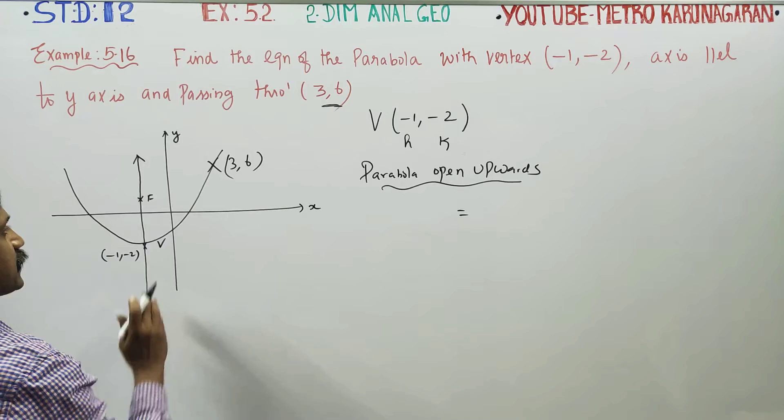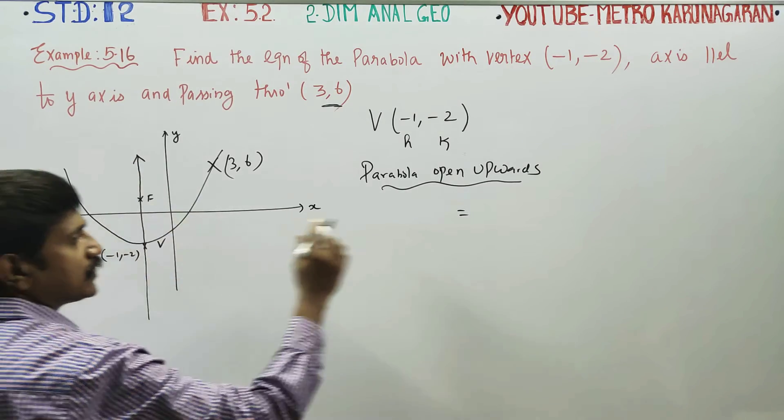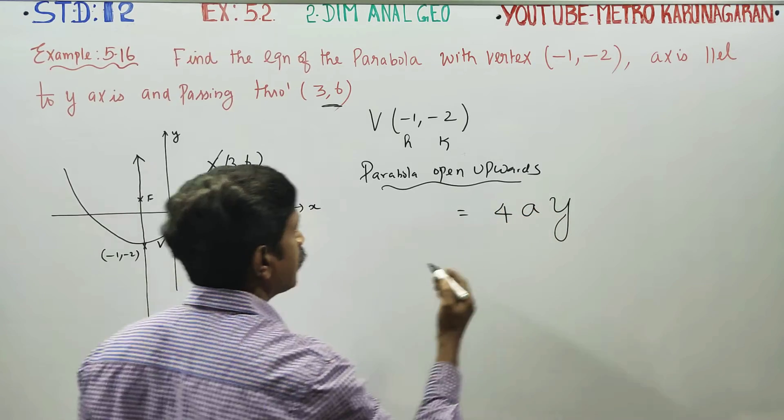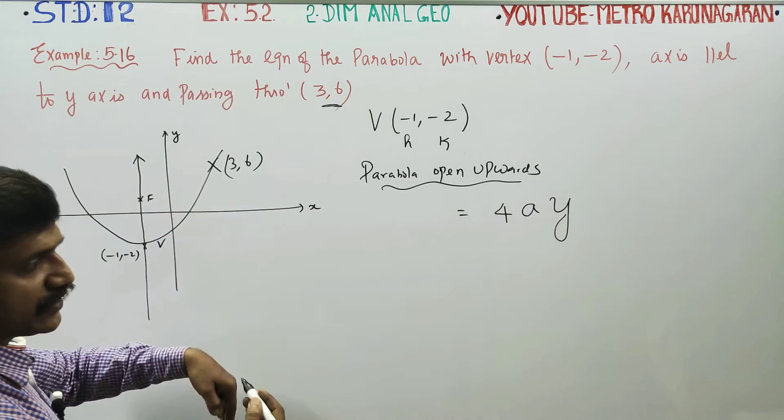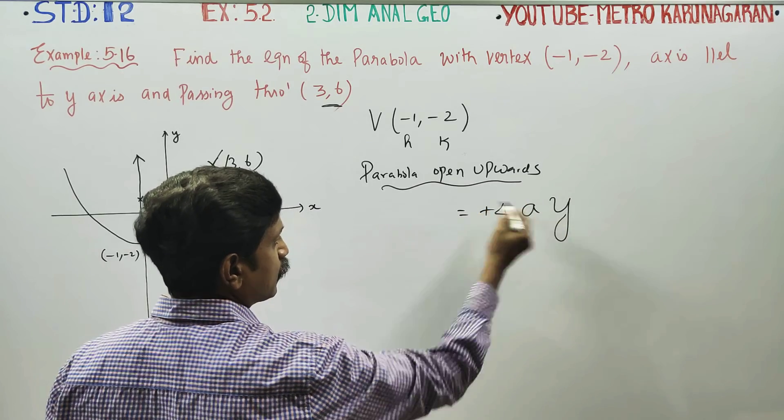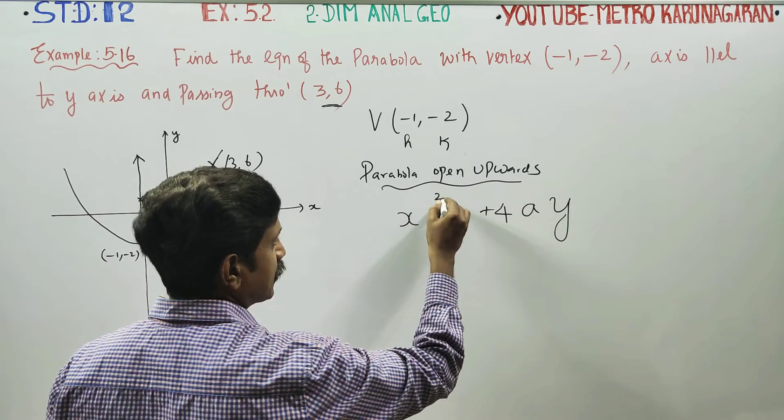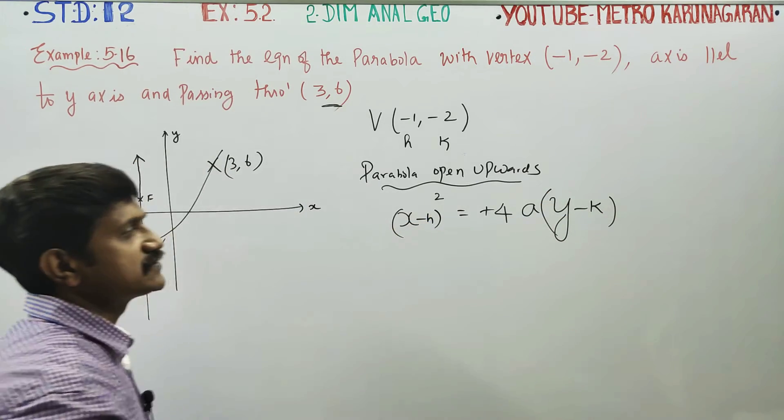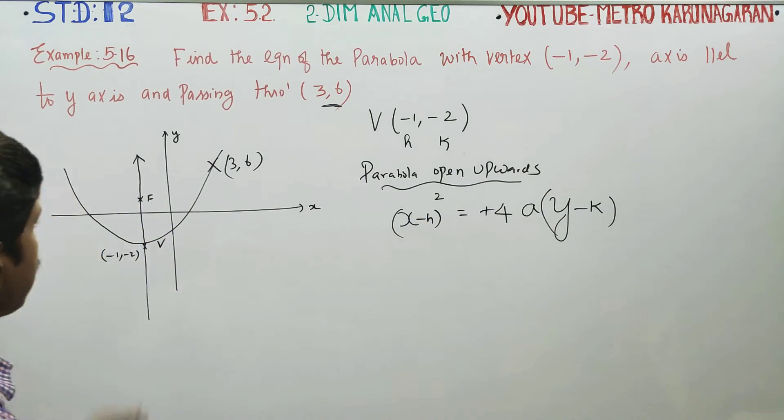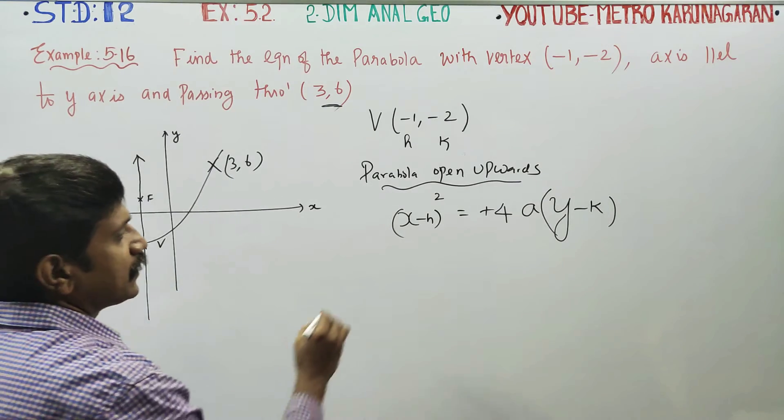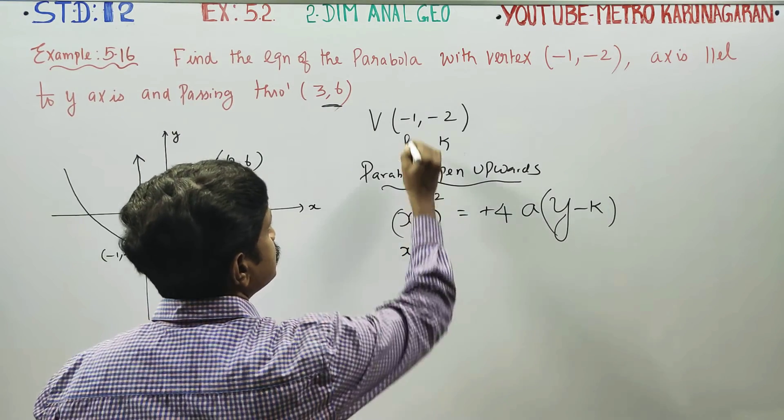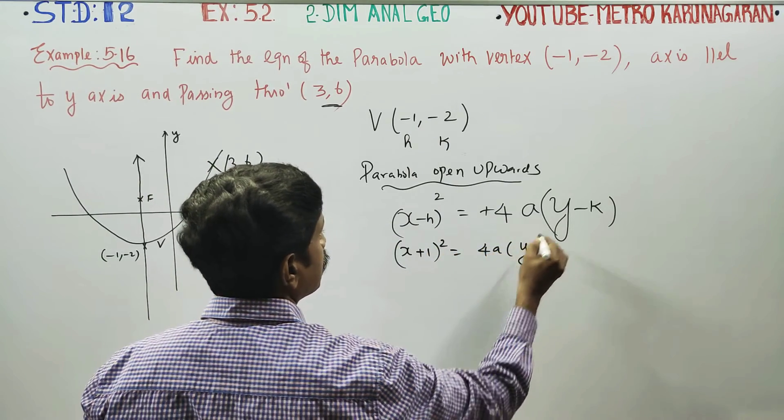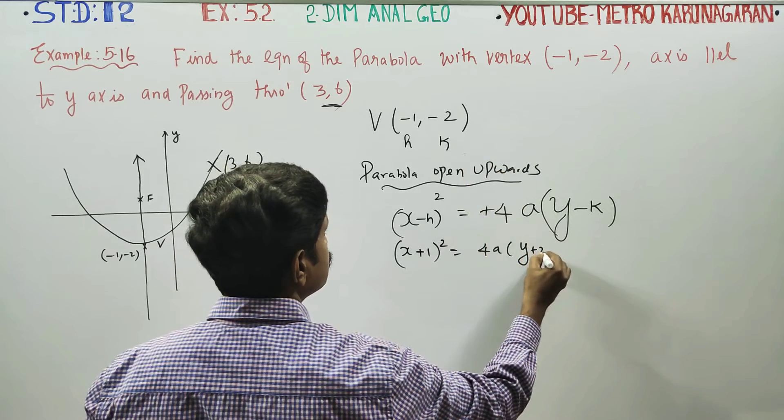Central axis is parallel to y. Start with y. For parabola opening upward, the formula is x minus h all squared equals 4a times y minus k. Here h is minus 1, so x plus 1, all squared. K is minus 2, so y plus 2. This gives x plus 1 squared equals 4a times y plus 2.